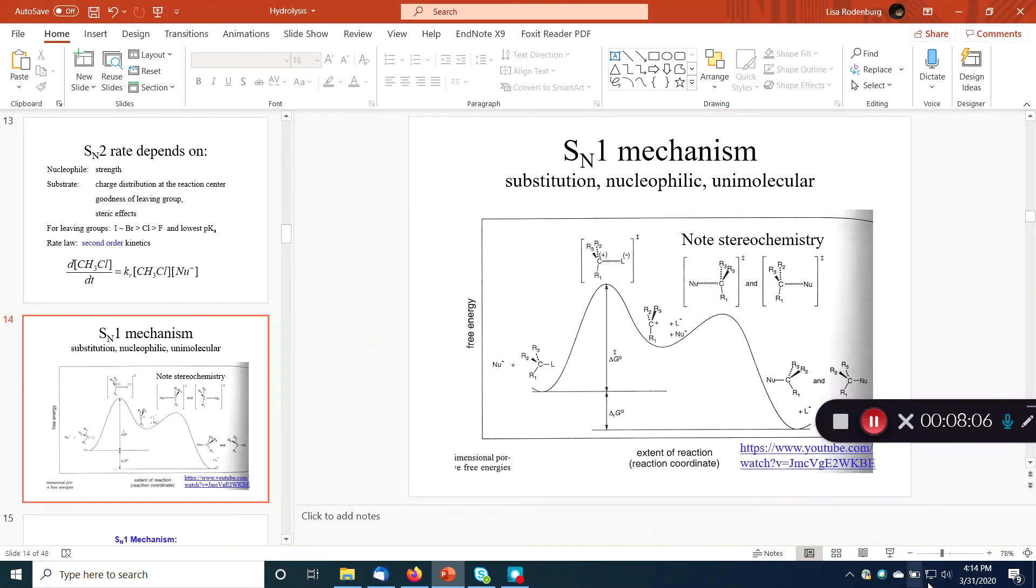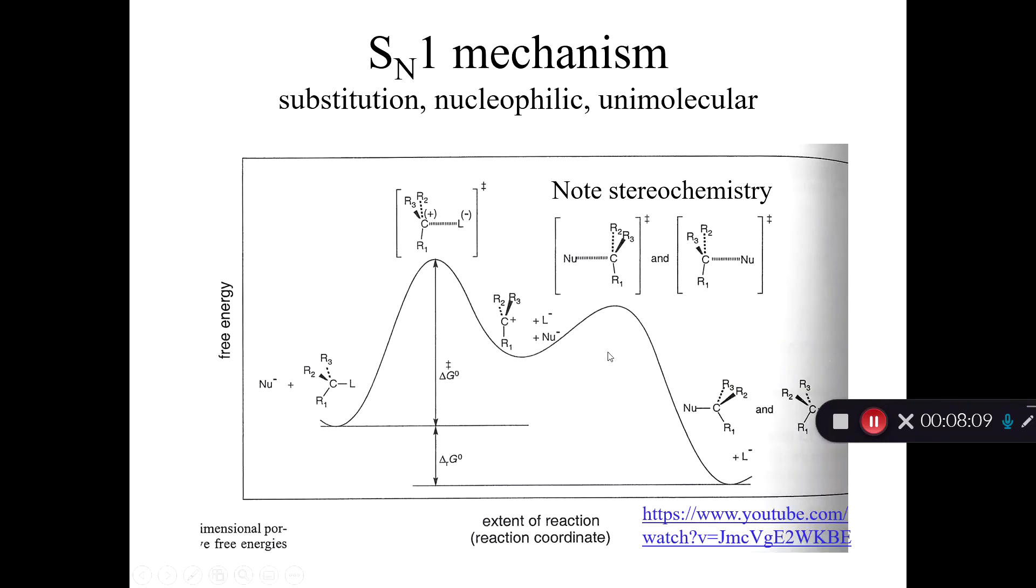So for the SN1 mechanism, again, leaving group leaves first, leaving behind the carbocation here. And then the carbocation will be caught by whatever nucleophile happens to be around. In our world of environmental chemistry, the nucleophile that's almost always around is water. So this thing's going to get captured by a water molecule. And notice that the water can attack from either side. And so that can scramble the stereochemistry. Sometimes that's important for environmental chemists because sometimes we do like to use stereochemistry as a way of tracking chemicals and figuring out what's happening to them in the environment.